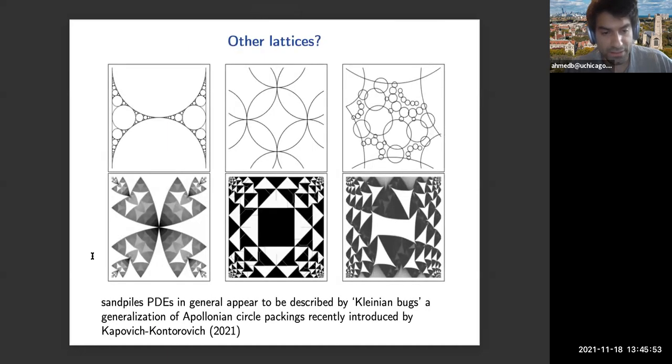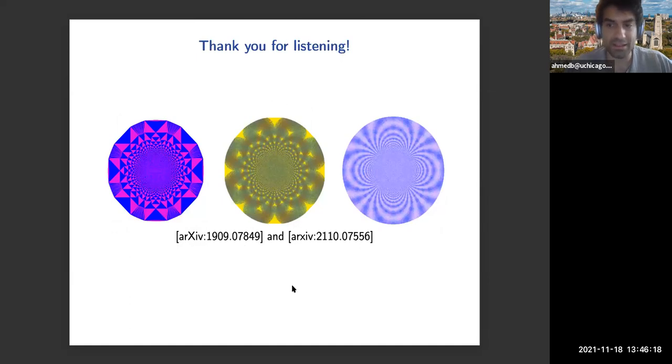Both of these results appear to be a special case of a much more general result, which is that sandpile PDEs in general are conjectured to be described by something called Kleinian bugs, which generalize Apollonian circle packing. But so far we only have two theorems and some simulation supporting this, so this is completely open. Thank you for listening.